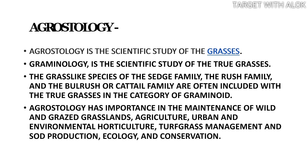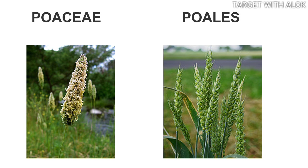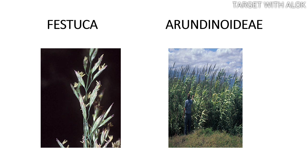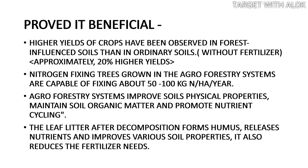Agrostology has importance in the maintenance of wildlife conservation, grazing lands, agriculture, urban and environmental horticulture, turf grass management, sward production, ecology, and conservation of natural resources. Some grass families studied in agrostology include Poa, Poils, Festuca, and Arundinoideae — students of agrostology are expected to study all these grass genera.